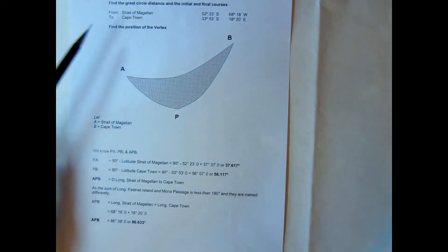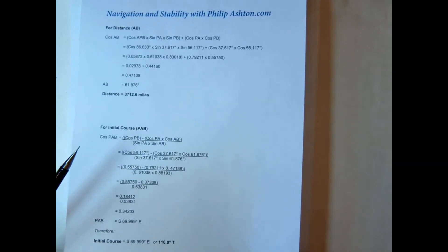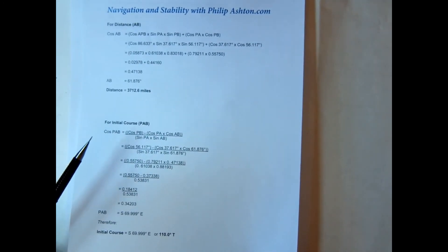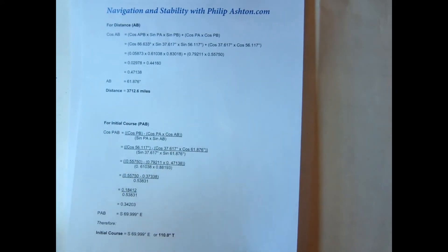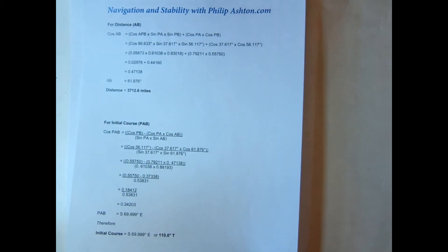We're in the southern hemisphere for both latitudes, so they're both subtracted from 90 degrees. We put them into the formula, the normal cosine formula, and we find that AB is 61.8 degrees or 3712.6 miles.